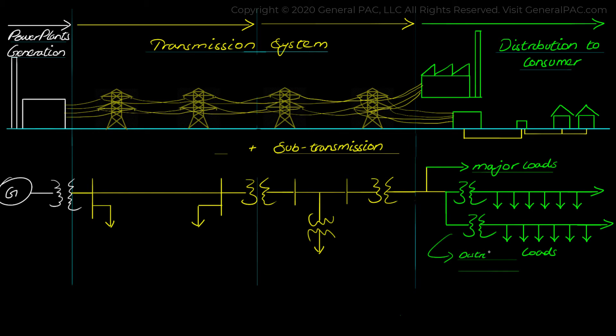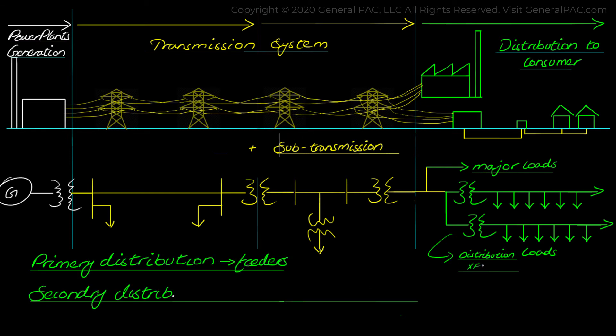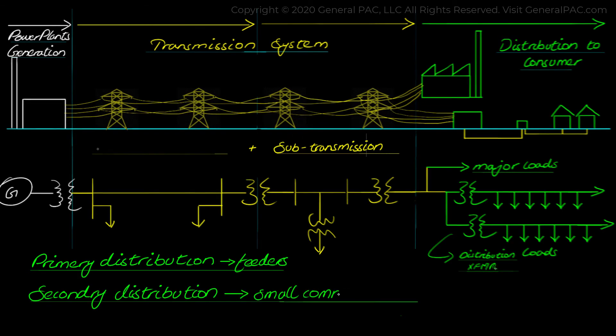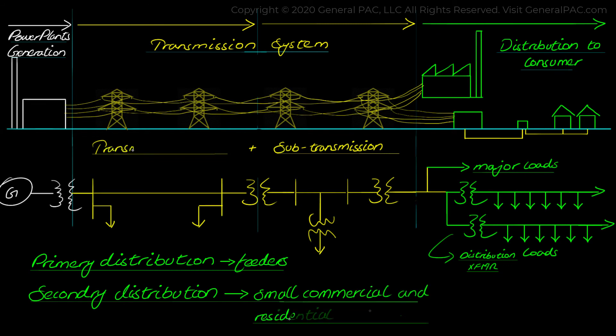It is divided into the primary distribution consisting of the feeder and lateral levels and the secondary distribution system connecting most of the small commercial and domestic consumers.